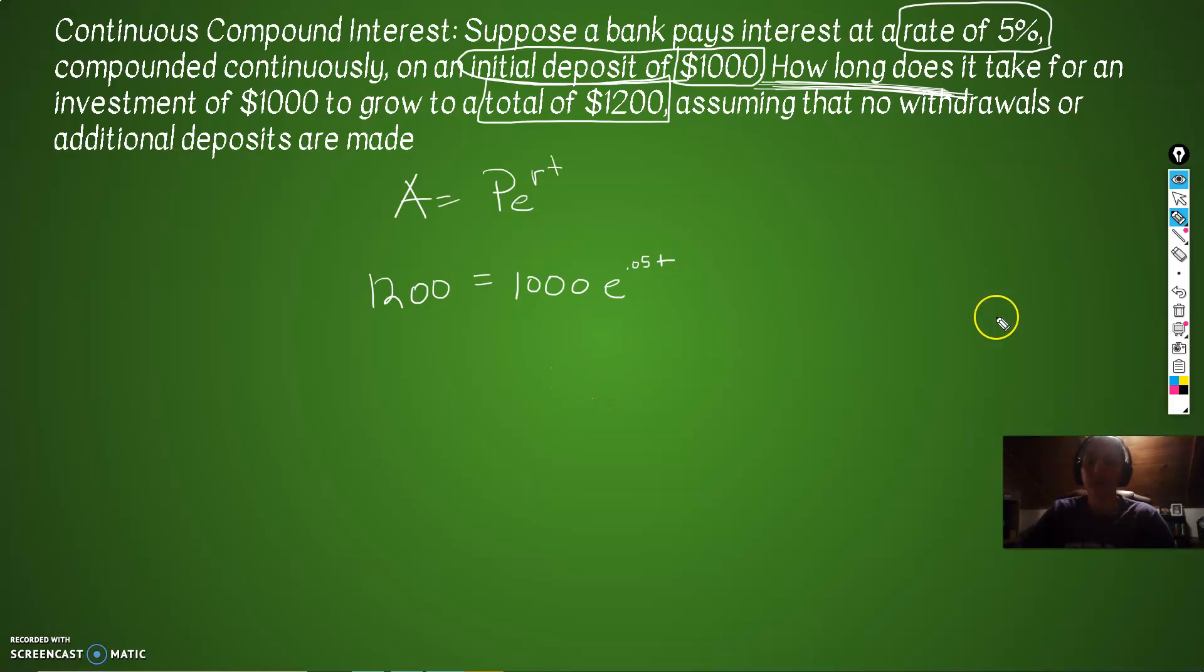Okay, well, how do we do that, you ask? Well, we use what we learned in the last videos for solving exponentials. We are going to start off by getting rid of the clutter, which is always the first step. So now we have E to the 0.05T on the right. We have 1,200 divided by 1,000. This is going to give us 1.2.